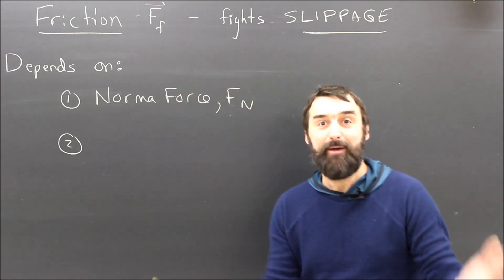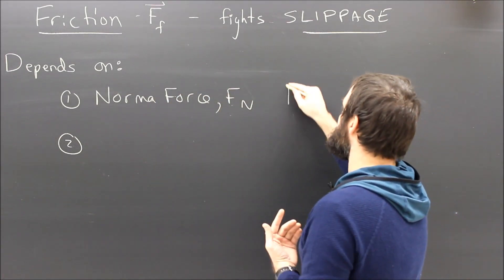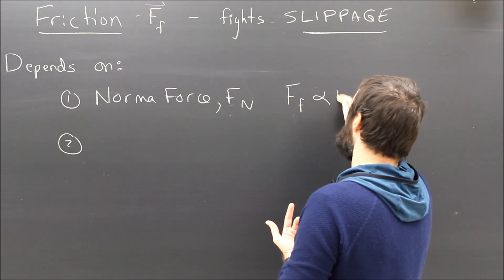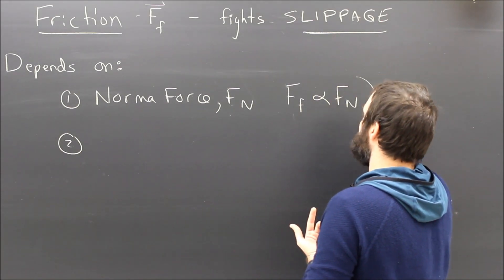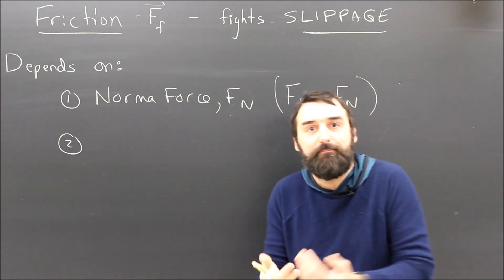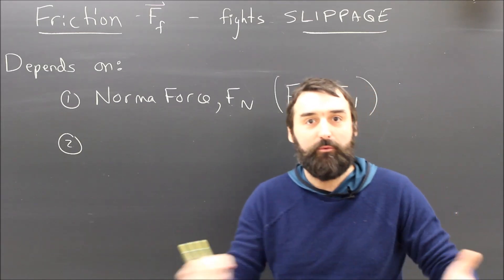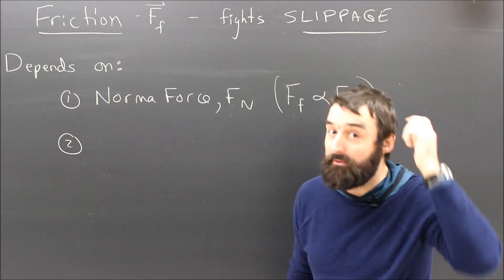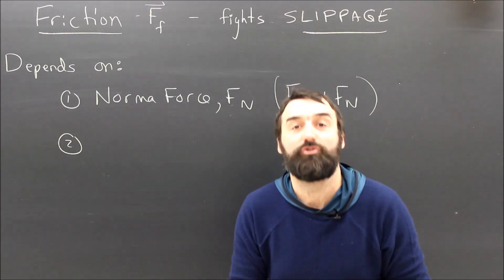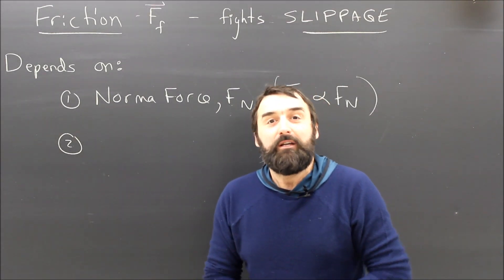So, we should do some physics, we can take measurements. And if we did, we would discover that the force of friction is directly proportional to Fn. I haven't proved it, but it is true. That's what physics is all about, we do experiments. We see that if I double Fn, the friction doubles. If I triple Fn, the friction triples.